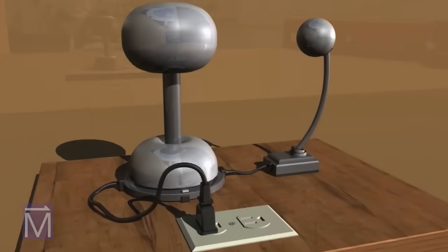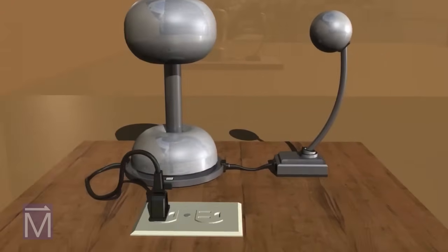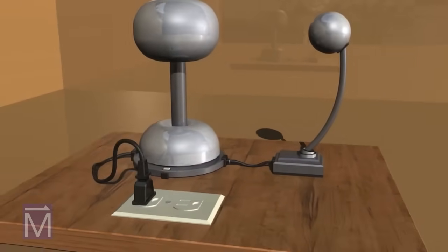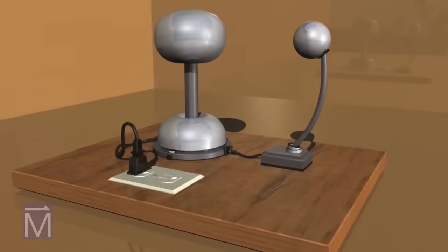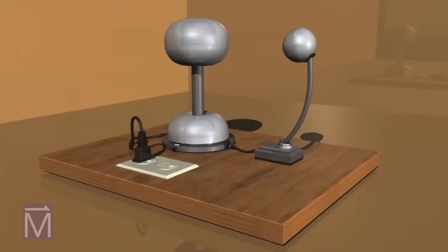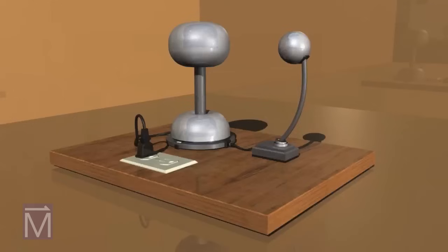The Van de Graaff Generator was invented by Robert Van de Graaff around 1930. Used originally to charge particles in atomic accelerators, nowadays it's used mostly to educate students about electrostatics. It can even make your hair stand on end in a dramatic display of static electricity. We'll see here how it works.